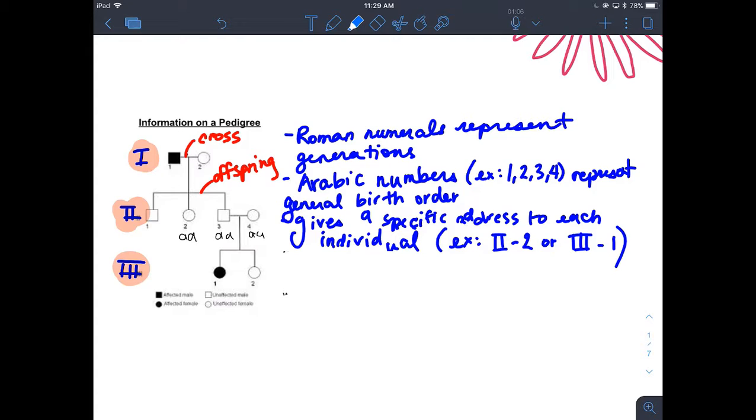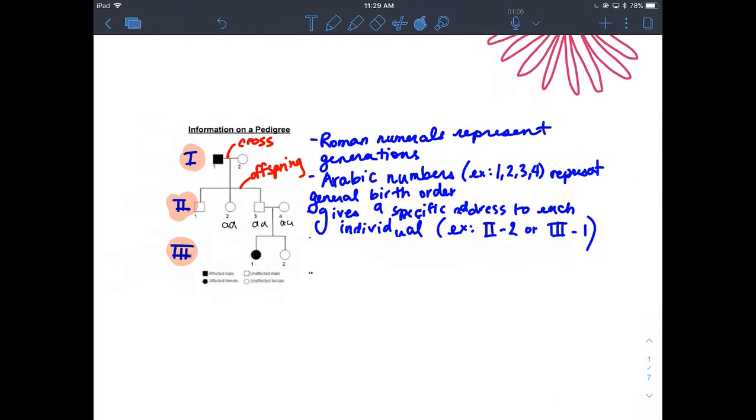The Arabic numbers one through four, as you can see in the greatest number in generation two, they help to determine the birth order. So the one being the oldest, four being the youngest in generation two. And it just helps us to determine a way to specifically address an individual. We can say in generation one, person two, generation three, person one, and that will help to draw attention to that specific person for us to discuss and talk about.